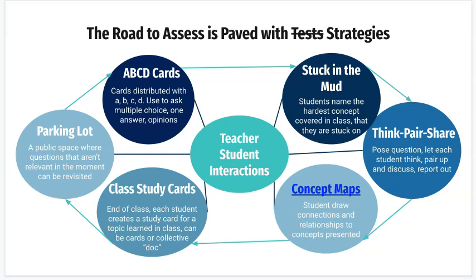Concept maps are when students draw connections and relationships to the concepts being presented. You can have something with a sequence or strategy and have students outline it to show what that is. You can draw it quickly, ask a student to come up to the board, or start the map yourself and have the group complete it together on a whiteboard. Online, you can do this with a digital whiteboard or Jamboard. In history, if students need to know the progression of a particular historical event, they can draw out that map and make connections between related events.